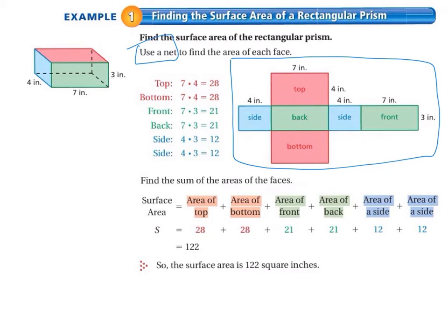So once you have it labeled, you have the top and the bottom, the back, two sides, and a front. You see that the top and the bottom are the same size. So you have 7 times 4, which equals 28.